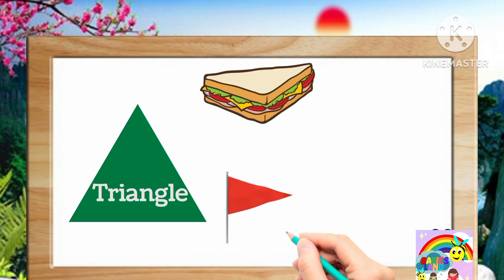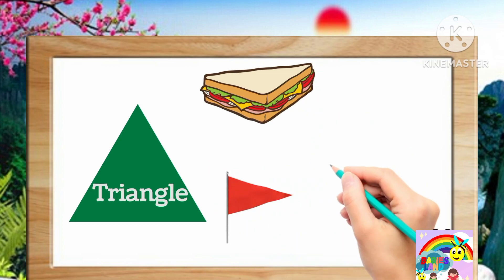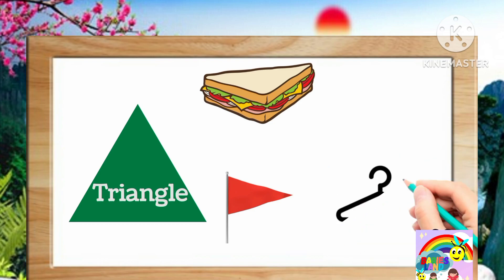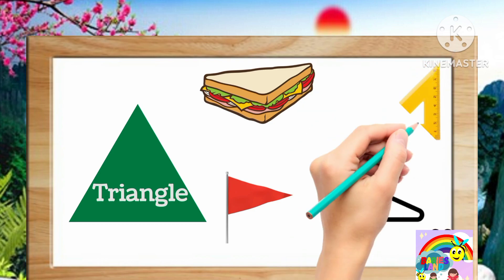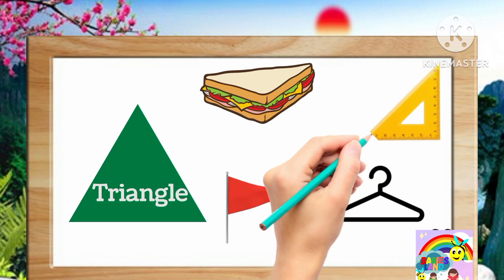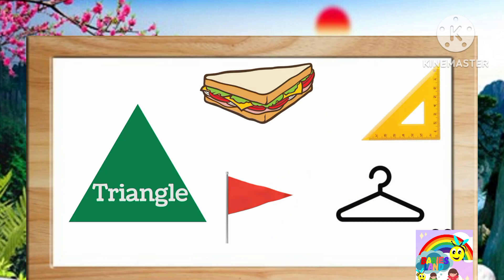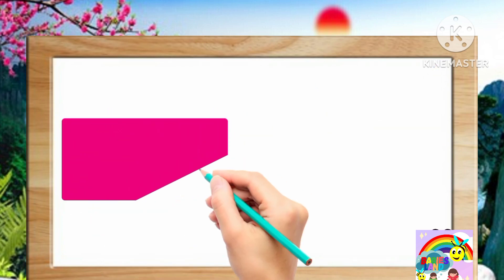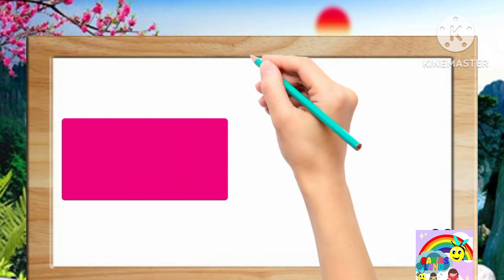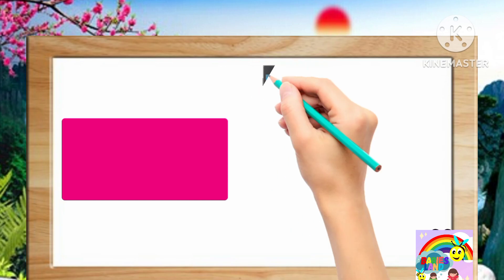flag, cloth hanger, triangle ruler. Next shape is rectangle.